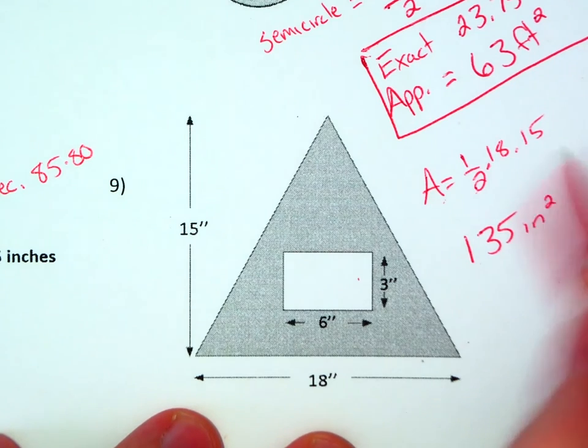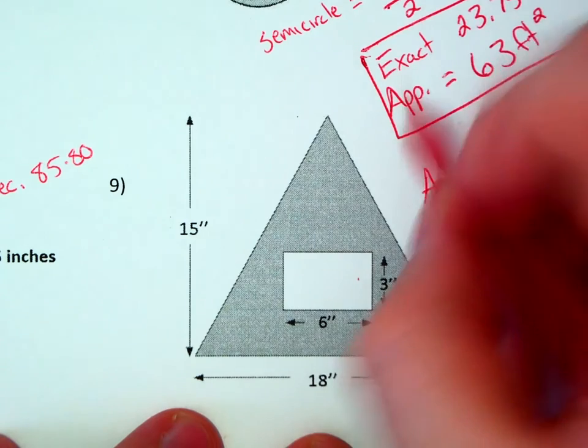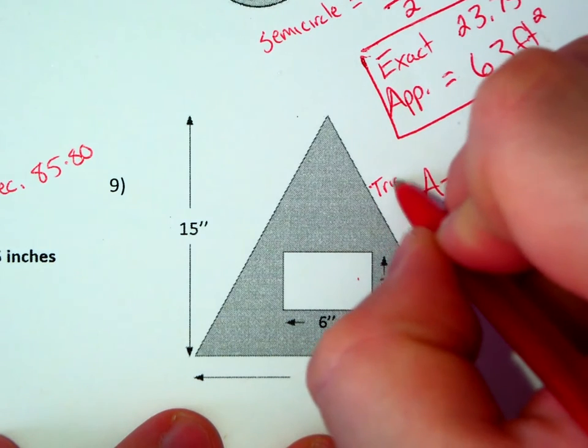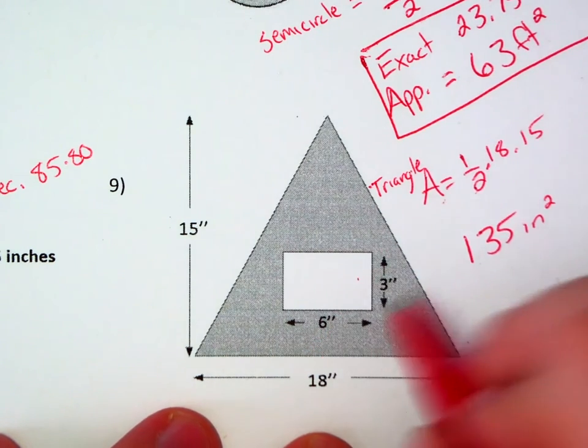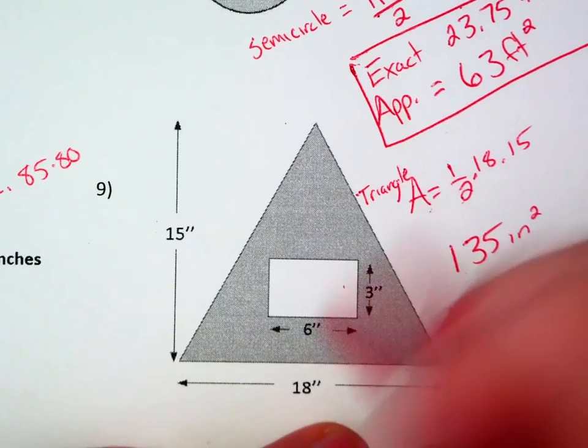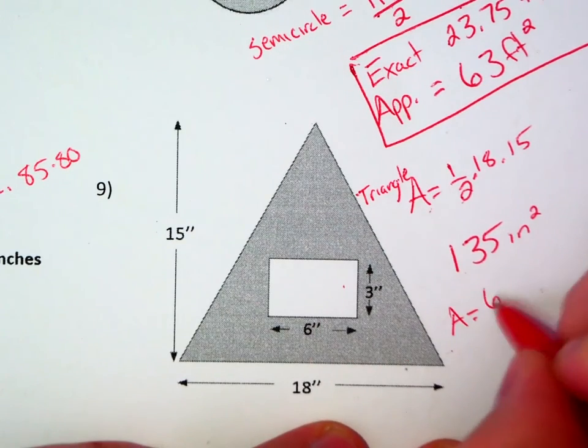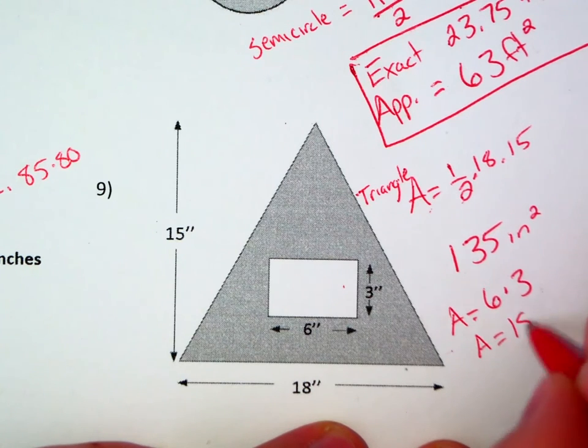Now I want to figure out the area of this cutout on the inside of my triangle. It's a rectangle, so I want to figure out the area of the base times the height. So 6 times 3, that area equals 18.